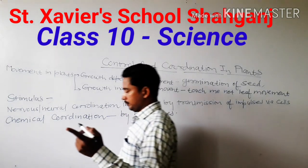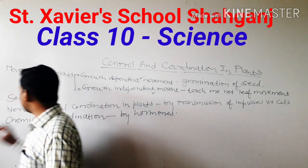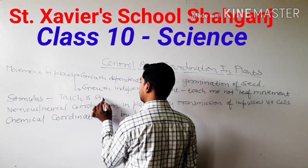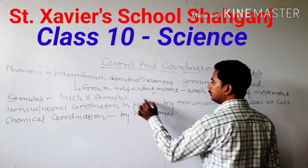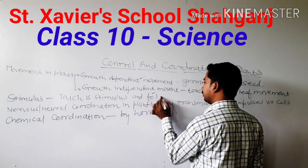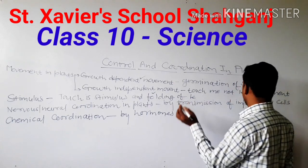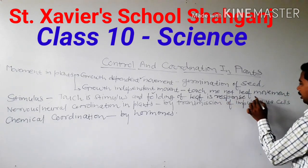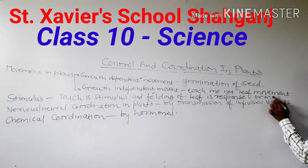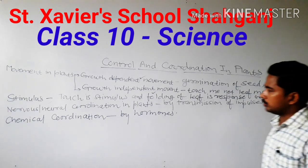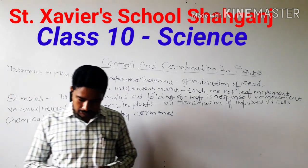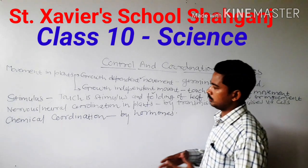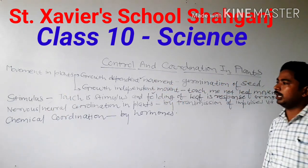The secretion of saliva is caused because of delicious food as a stimulus. Similarly, in plants, touch is the stimulus and the folding of leaves is the response or movement. So stimulus is any physical or biological factor because of which movement in a living organism takes place. In this case, the touch in Mimosa Pudica is the stimulus.